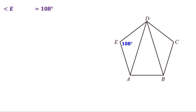In an isosceles triangle, the angles opposite to equal sides are equal. That means the base angles of triangle AED are equal. The sum of the three angles in a triangle is 180 degrees. Therefore, the sum of those two base angles is 180 minus 108, or 72 degrees. Since these two angles are equal, each of them equals 36 degrees.